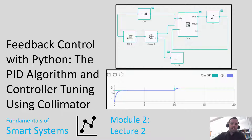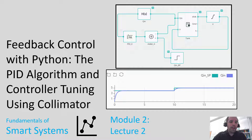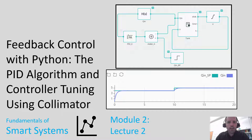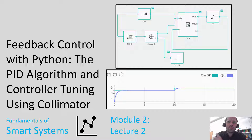Welcome to our video lecture. Today we are going to be talking about controller tuning and implementing PID control using Python, and specifically we're going to use a tool called Collimator, which is a nice graphical user interface — a lot like Simulink — but geared toward Python users.